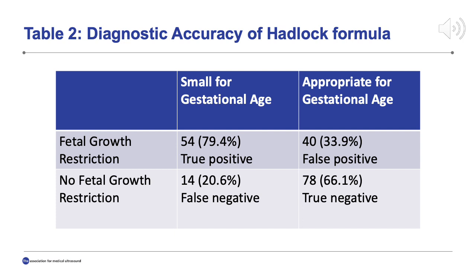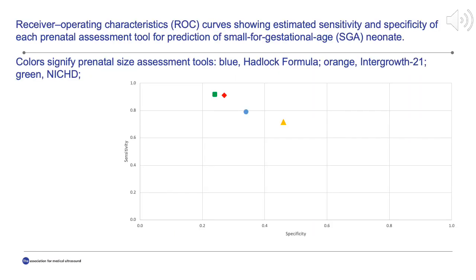This reflects true positives, or sensitivity. Infants predicted to be appropriate for gestational age were identified correctly in 66.1% of cases — this reflects true negatives, or specificity. The false negative rate was 20.6% and the false positive rate was 33.9%. This slide demonstrates the receiver operating characteristics curve for each growth chart. The green dot represents the NICHD growth curve with the highest sensitivity. The Intergrowth 21st growth chart is represented by the orange dot with the highest specificity. The Hadlock growth chart, represented by the blue dot, is somewhere in the middle.